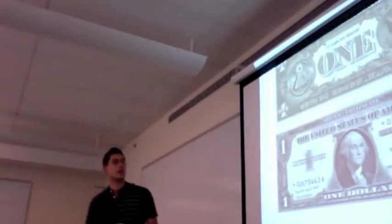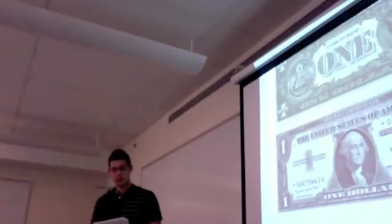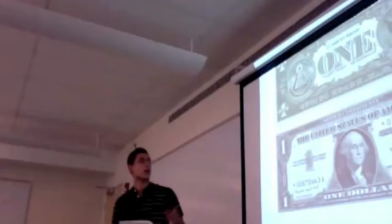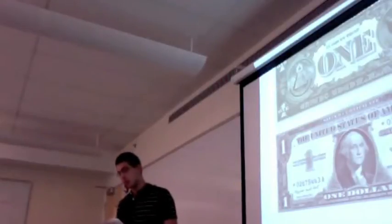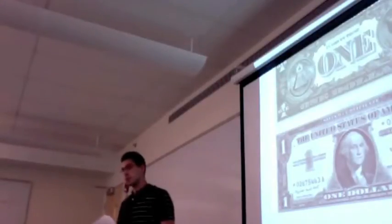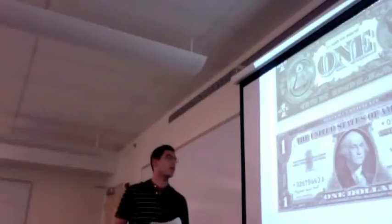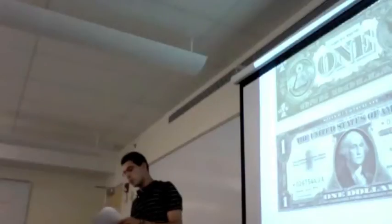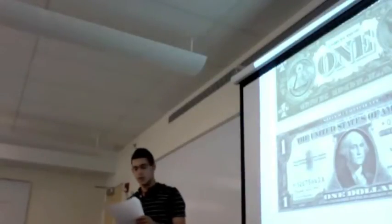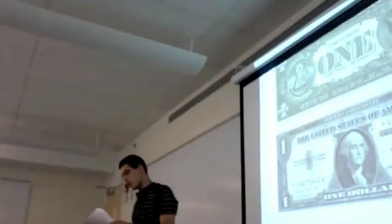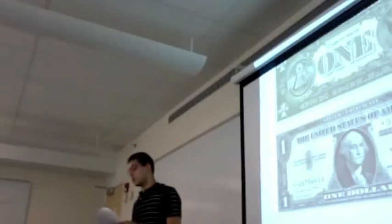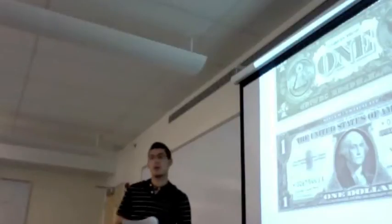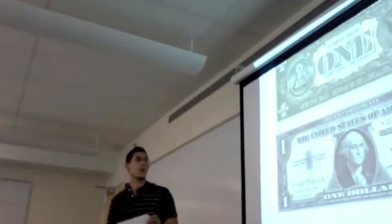And on the $1 bill, they have incorporated many signs of 13, symbolizing the original 13 colonies. There are 13 stars on the eagle, there are 13 steps on the pyramid, there are 13 letters in both of the Latin names, there are 13 vertebrae bars on the shields, there are 13 stripes on the shield too, there are 13 leaves on the olive branch, there are 13 fruits, and there are 13 arrows, all symbolizing 13 colonies.